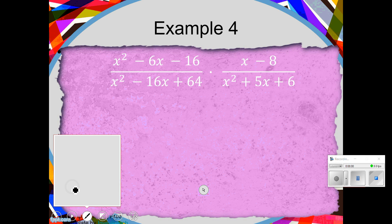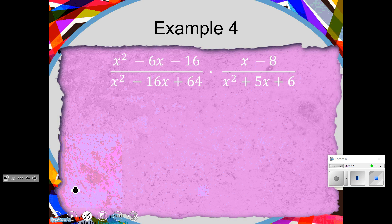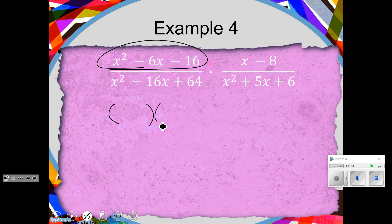So here we go. Factor what we can, cancel what we can, smush it all together. I think this first trinomial can factor. I would love for you guys — you should know how to do this, this is a review. Hit the pause button, you do it, and then check it by me.